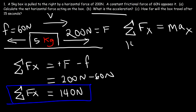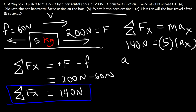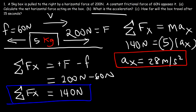The net force we know is 140 newtons. The mass of the block is 5 kilograms. So to find the acceleration in the horizontal direction, it's going to be 140 divided by 5, which comes out to be 28 meters per second squared. So that's the answer for part B.